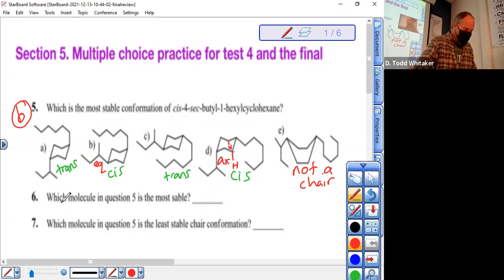Now which molecule in question five is the most stable is another good question. I'm liking C, it's got both groups equatorial.